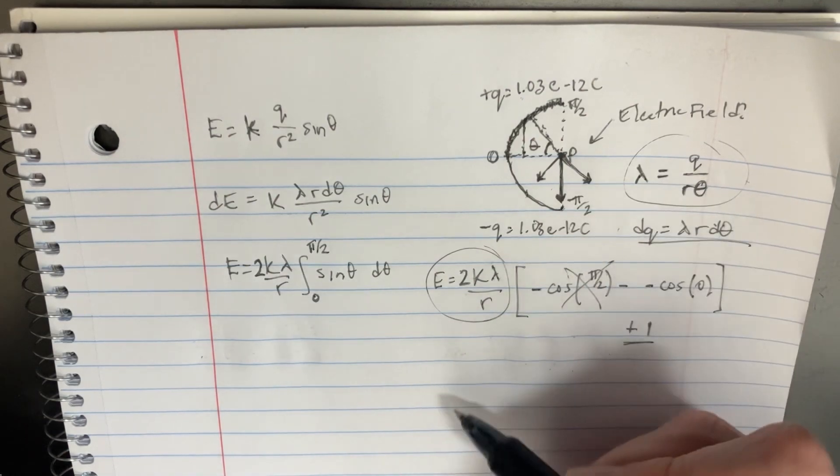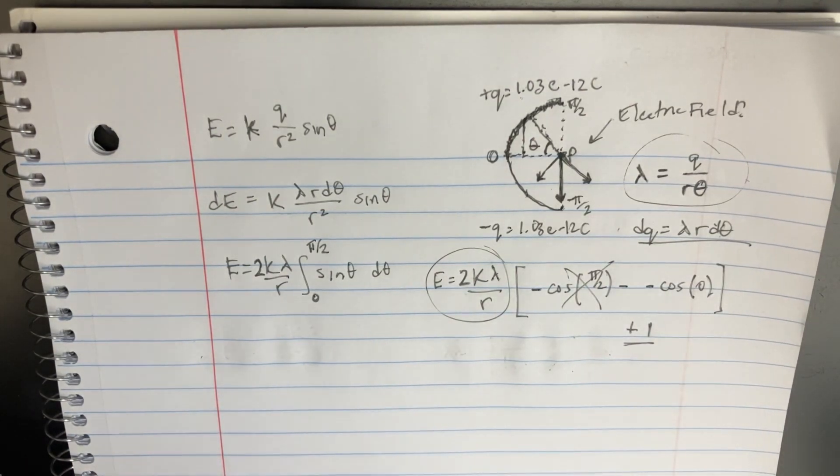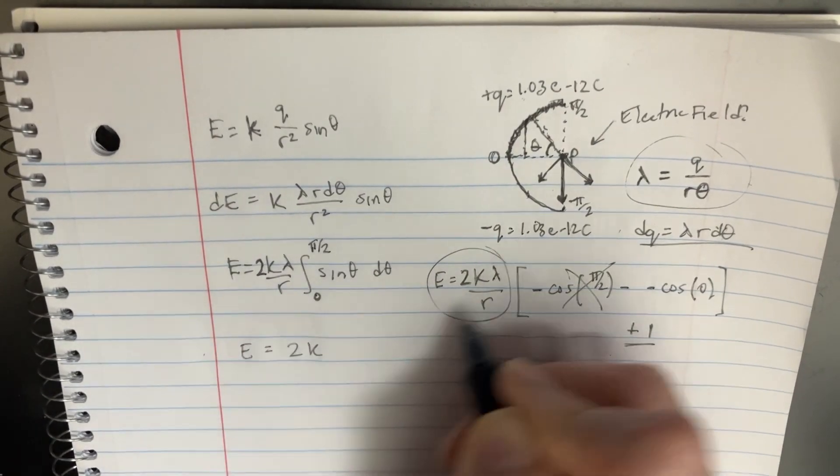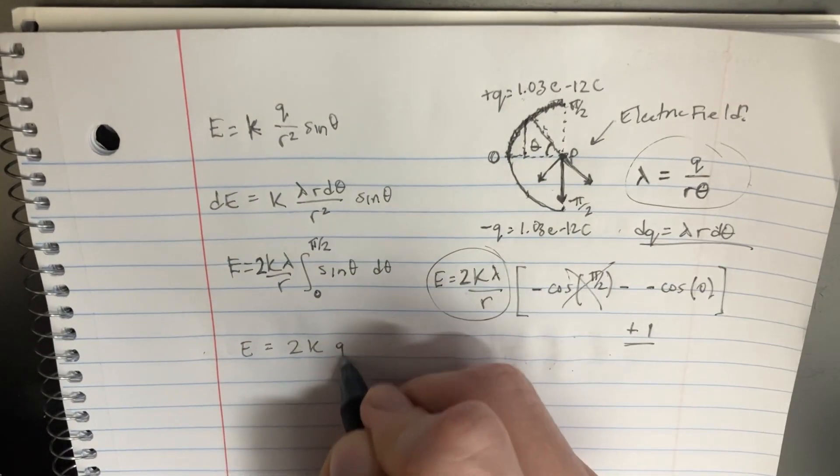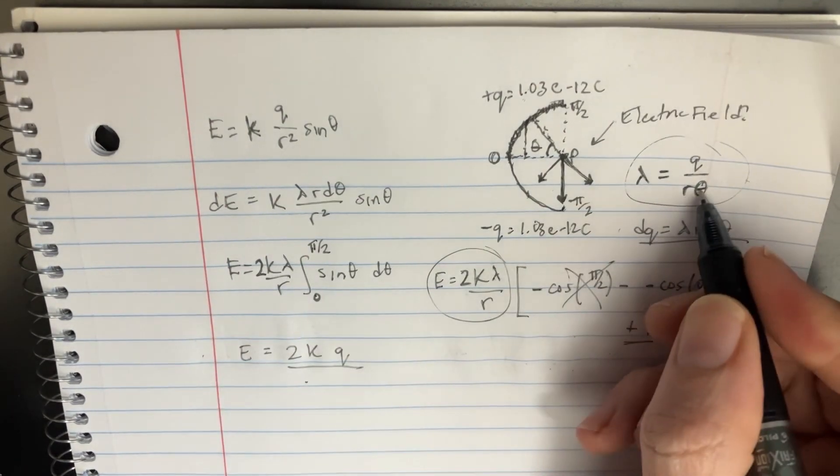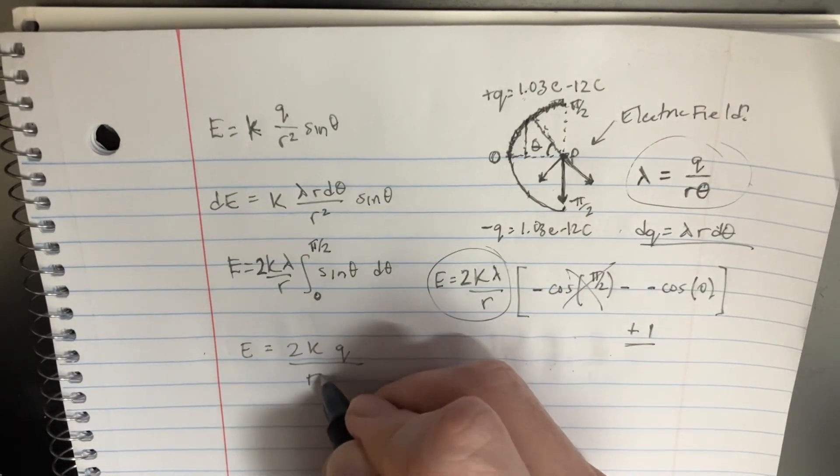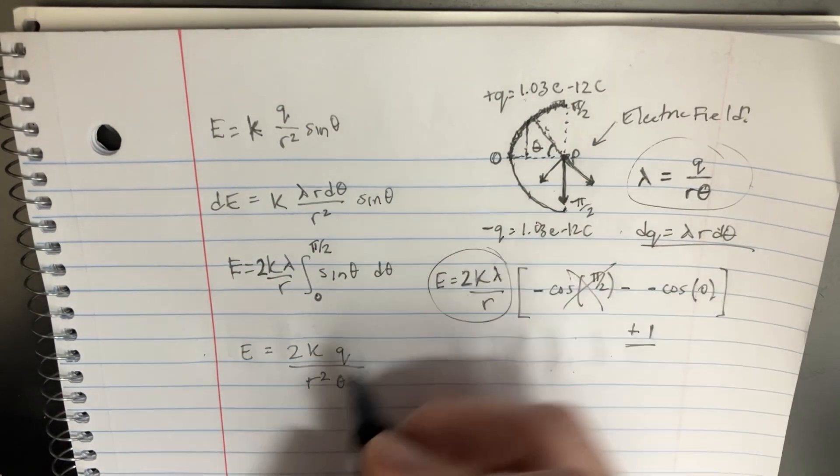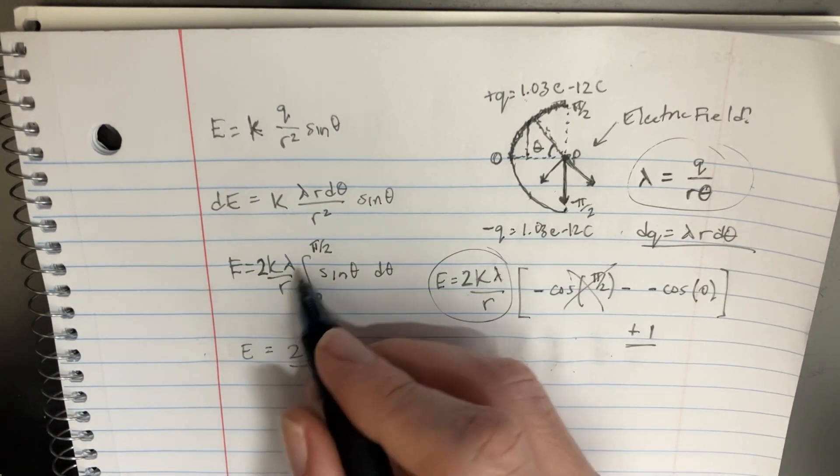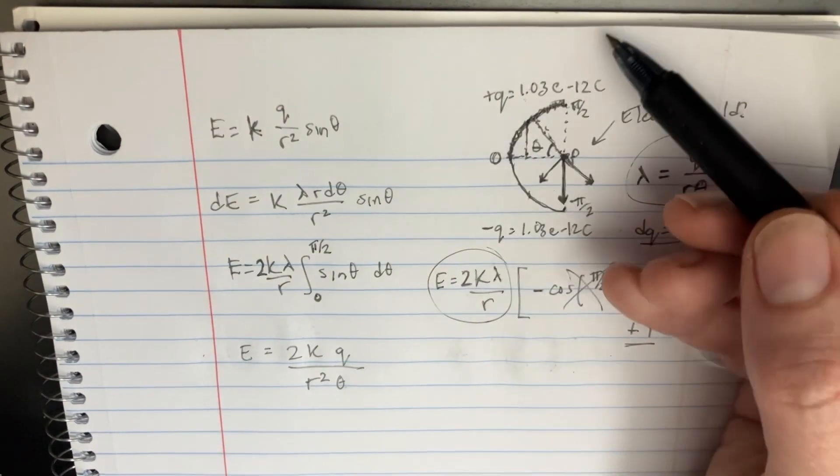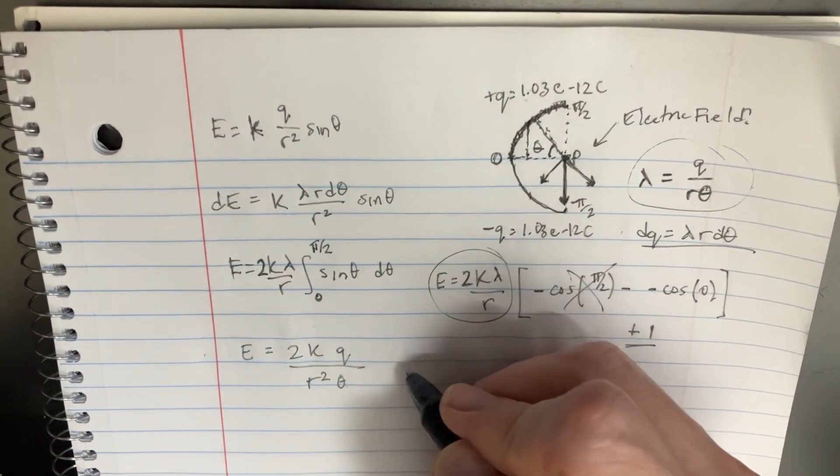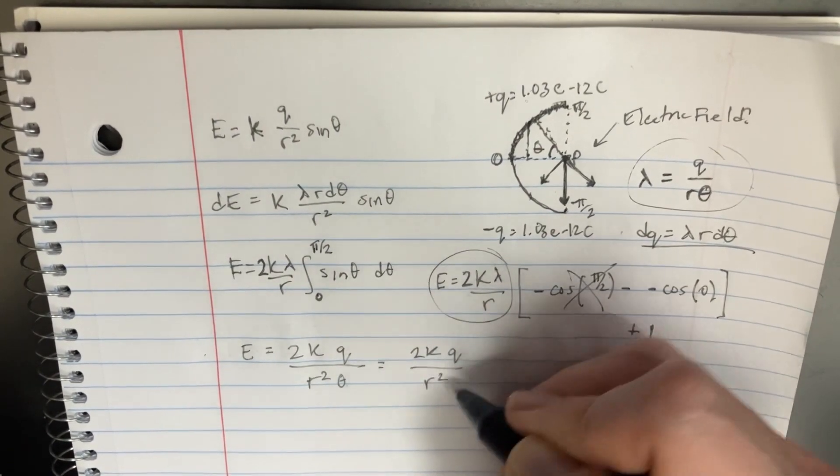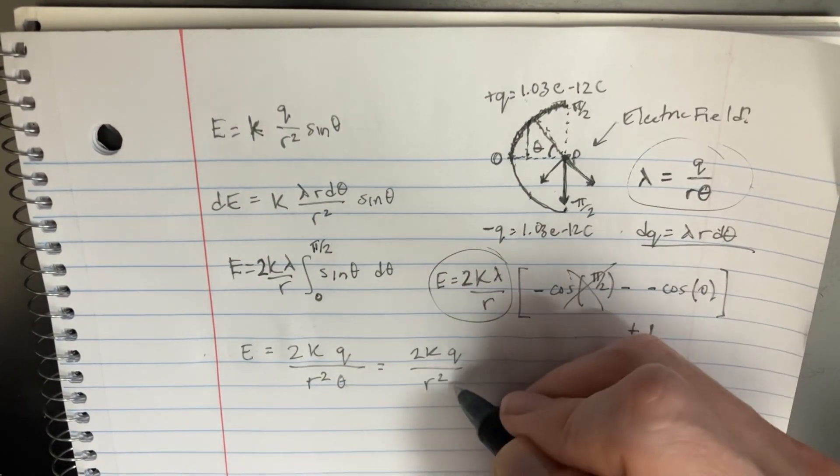Let's try to combine these two equations that we've been working with. So we would have E equals 2K, and then this is technically Q over, if we combine R and R, that would be R squared theta. And then that's basically what we want to know. What is the theta that we've been working with? It's going to be this pi over two. So we'll replace that in there. So 2K Q divided by R squared, and pi over two in there.